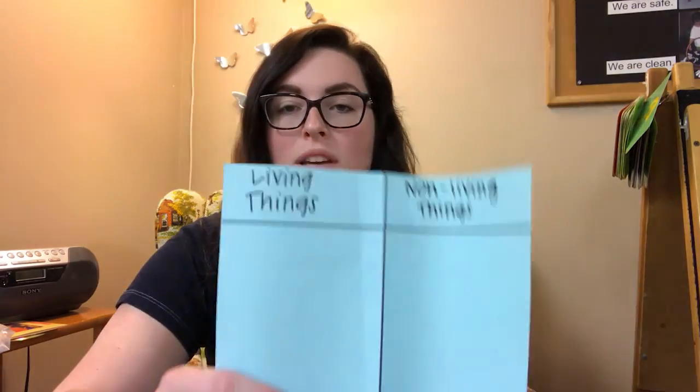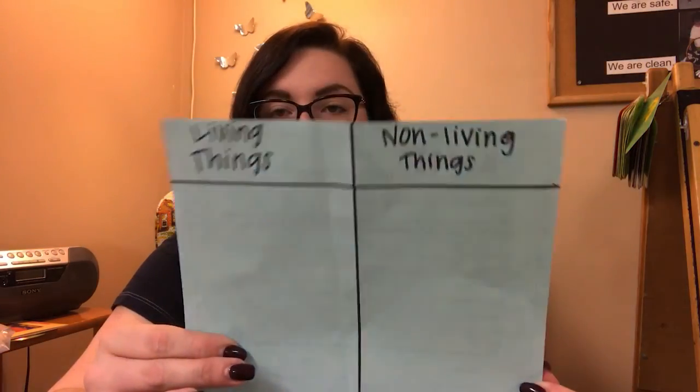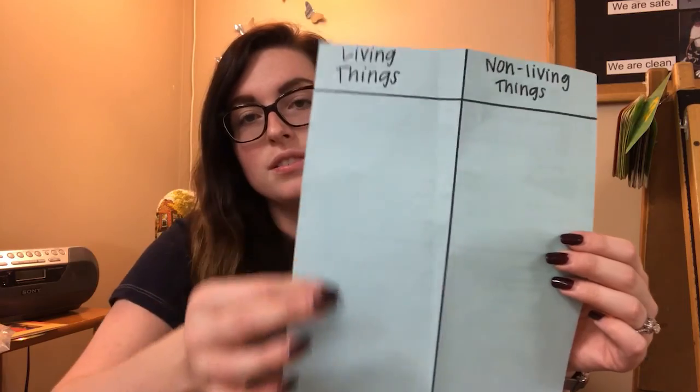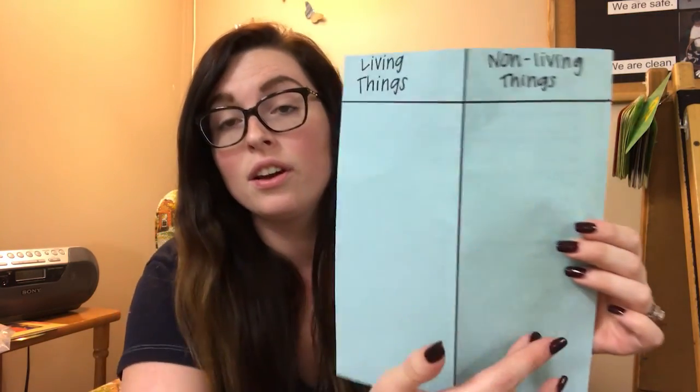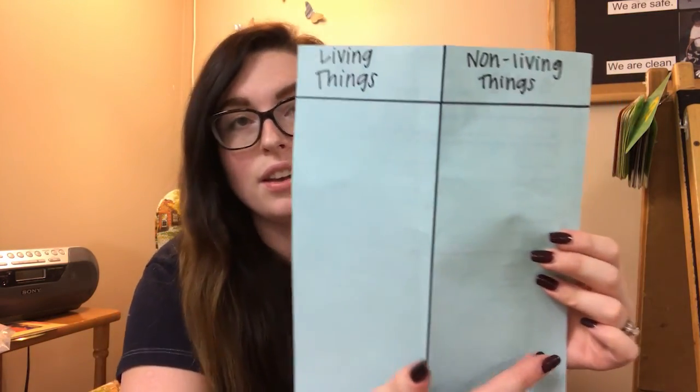Before we go outside, I'll ask the children a few questions such as: where will we look, and what do you think we'll see? I'll ask the children to name living and non-living things that they think we might see on our nature walk, and I'll make a little chart and list the living things they say on one side and the non-living things they say on the other side.